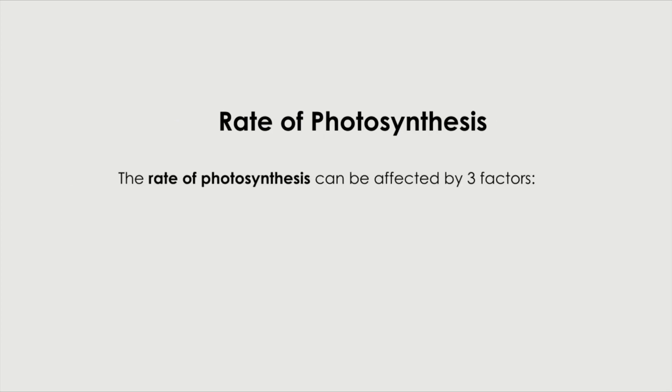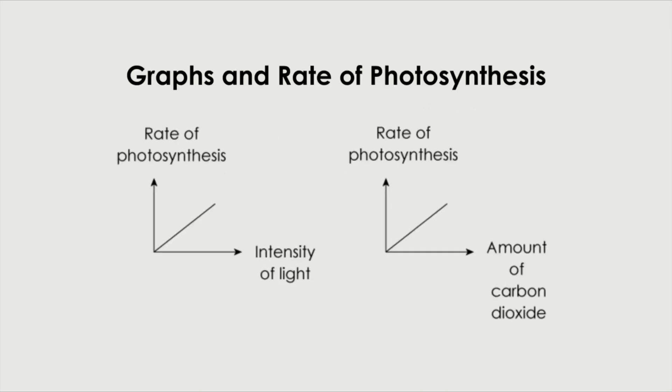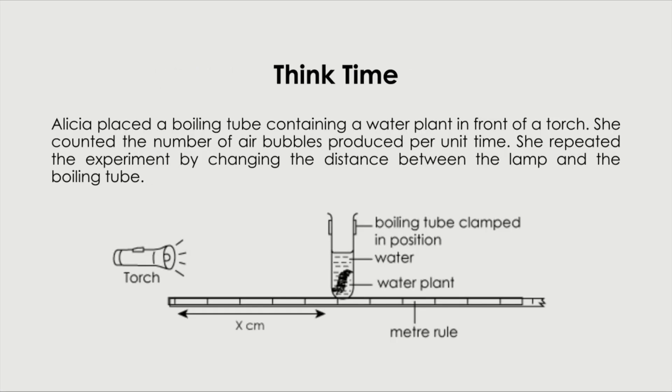Rate of photosynthesis. There are three factors that affect the rate of photosynthesis. The intensity of light, the amount of carbon dioxide and the amount of chlorophyll. With the intensity of light, the more intense the light is, the higher the rate of photosynthesis. Same applies for amount of carbon dioxide because we know that the plant takes in carbon dioxide. The more there is, there will be a higher rate of photosynthesis.